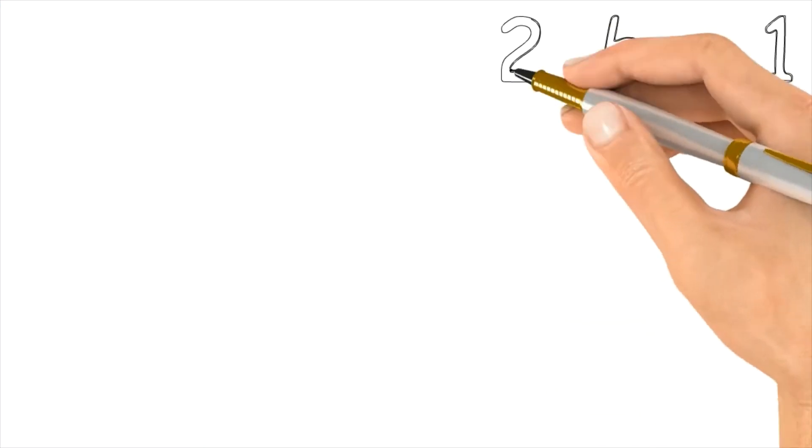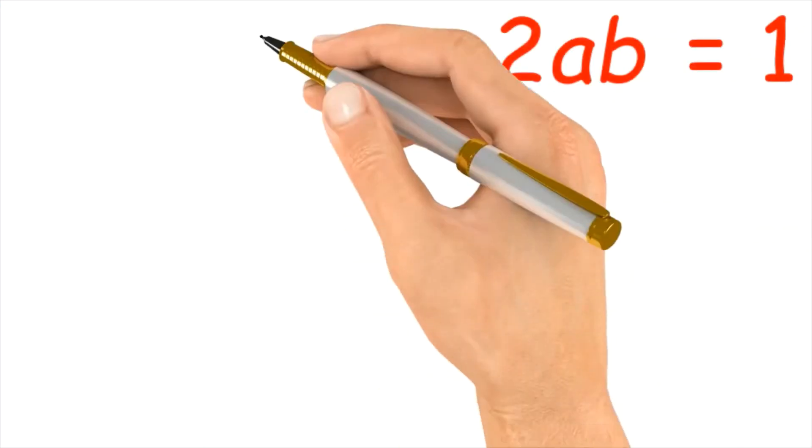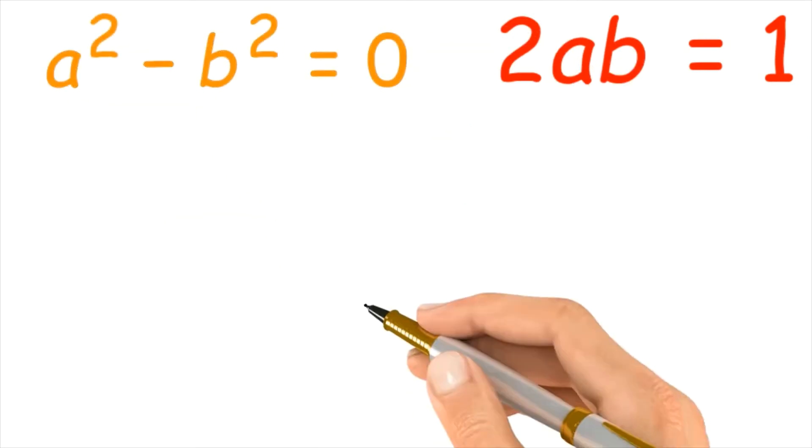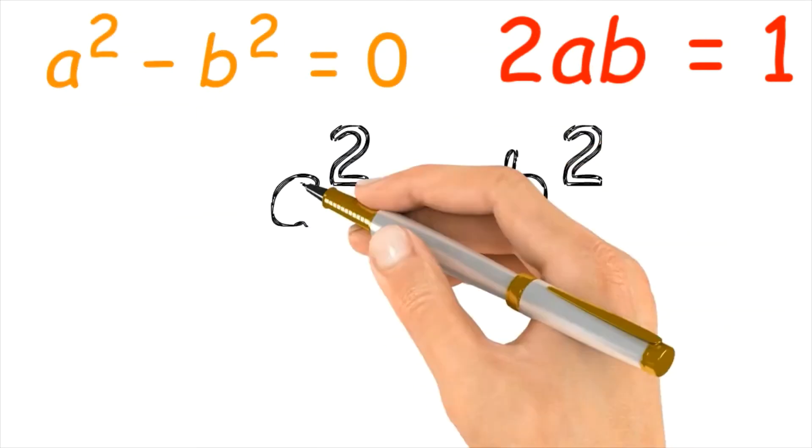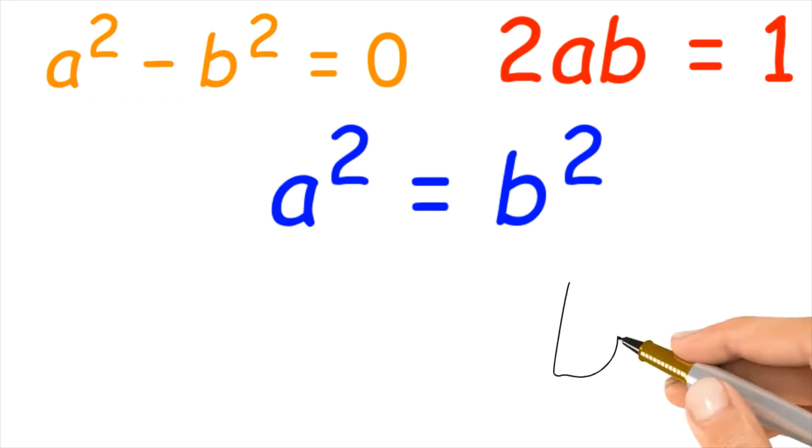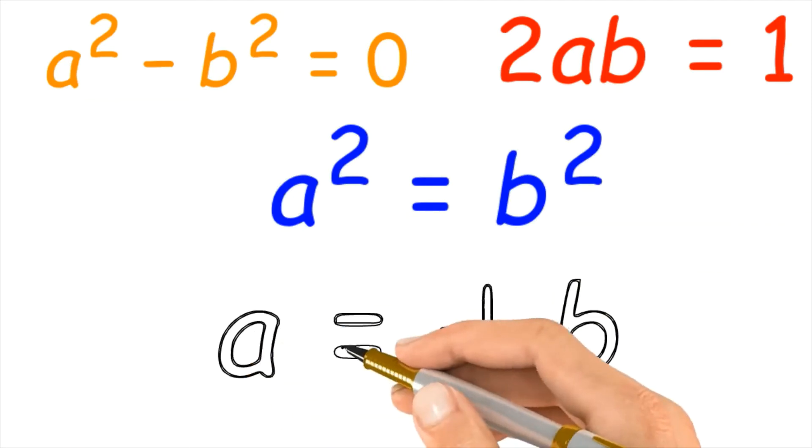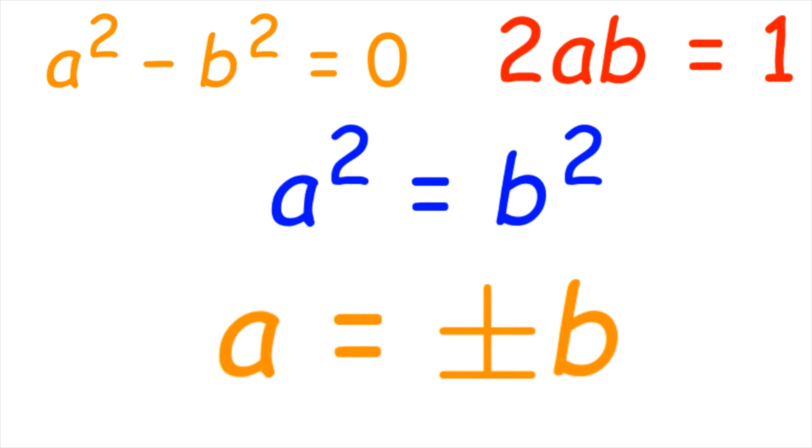Now we have two different equations using the principle that we just learned. a² - b² = 0 because the real parts are equal to each other, and 2ab = 1 because the imaginary coefficients are equal to each other.